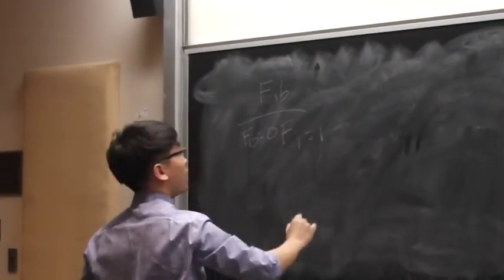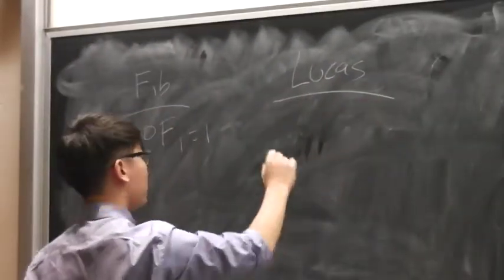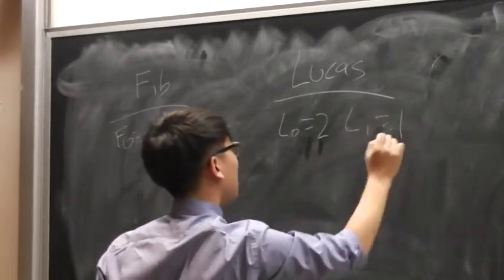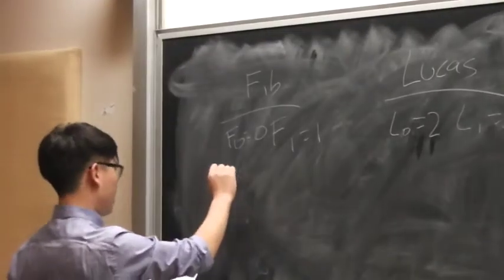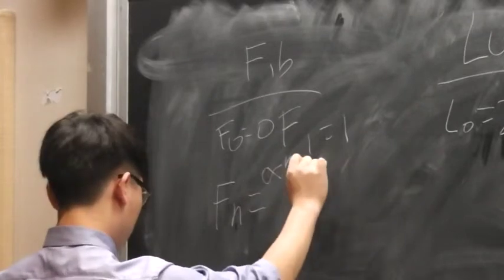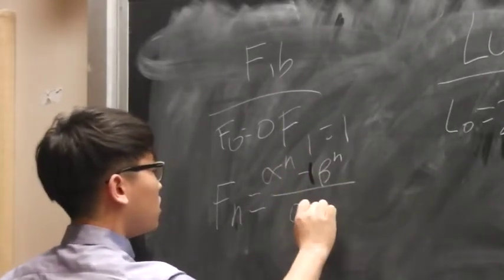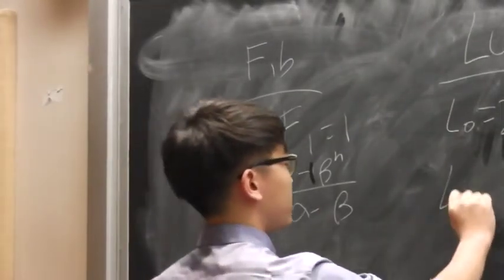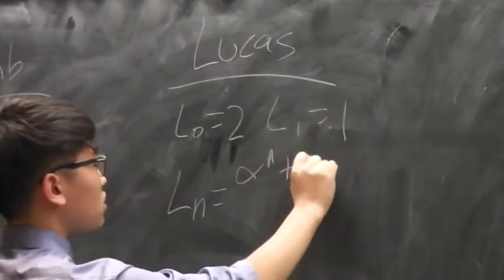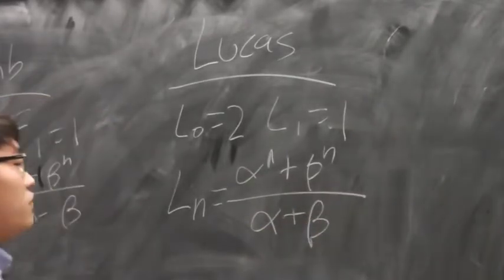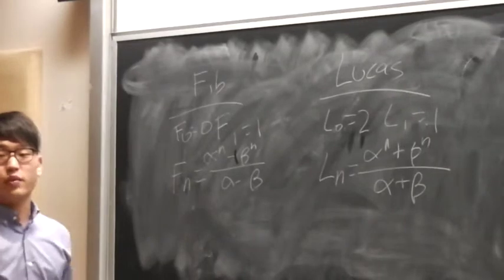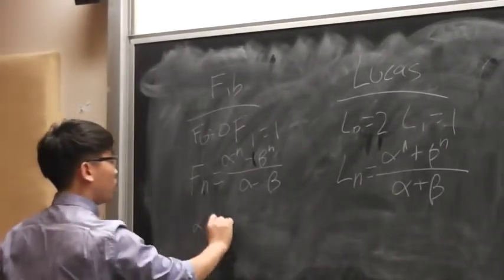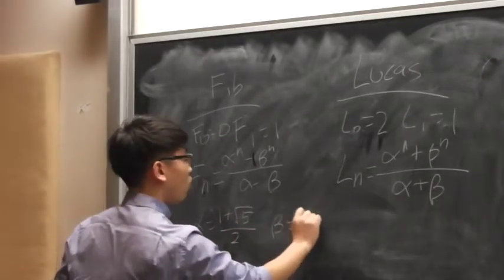I'm going to write a few things on the board. For the Fibonacci numbers, F(0) equals 0, F(1) equals 1. Binet's formula allowed me to express these in terms of alpha and beta. For the Lucas numbers, it was quite similar but slightly different. The alpha and beta values come from the characteristic equation x² = x + 1, giving alpha = (1 + √5)/2 and beta = (1 - √5)/2.